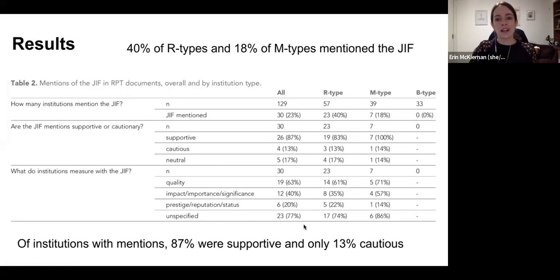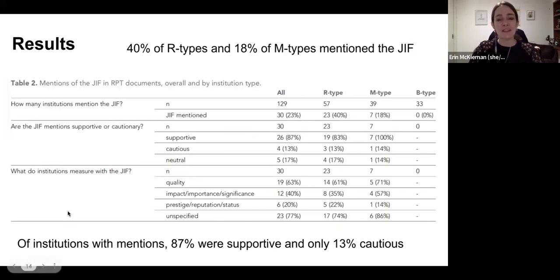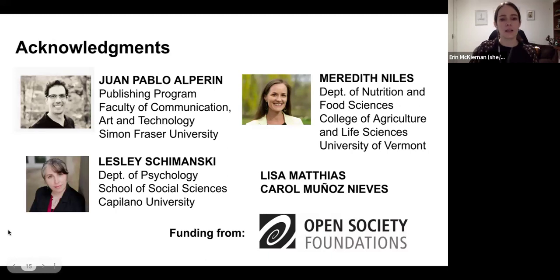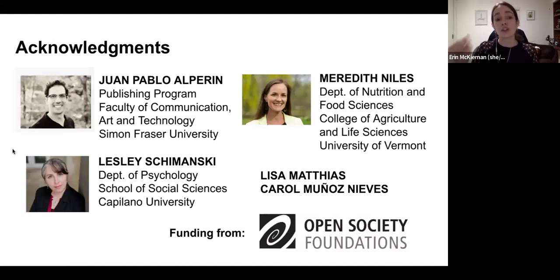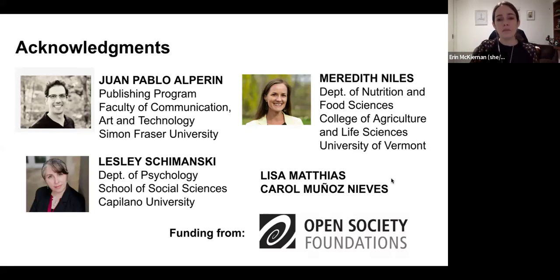There are methodological questions about whether this number should be higher if we analyze the third group of terms — questions I'd be happy to discuss. So that's basically what we found overall and the methodology we used. Just a few quick acknowledgements: Juan Pablo Alperin at Simon Fraser University was the lead PI on this study through the ScholCom Lab. Meredith Niles and Leslie Chemensky were also co-PIs. For this particular study, Lisa Matias and Carol Nieves worked with us, especially on pulling the documents through NVivo and coding. Our funding came from the Open Society Foundation — hugely grateful to them for several years of funding.